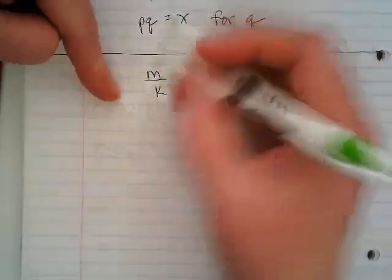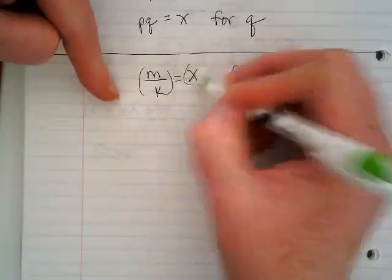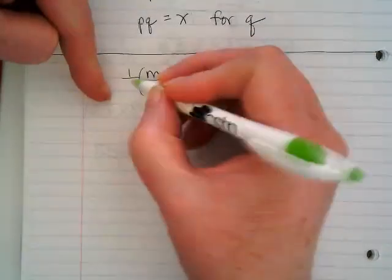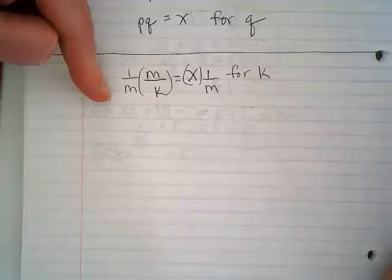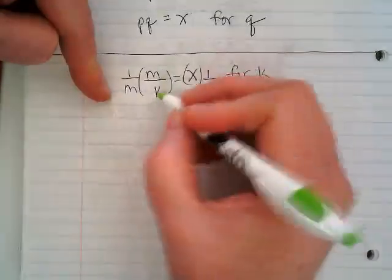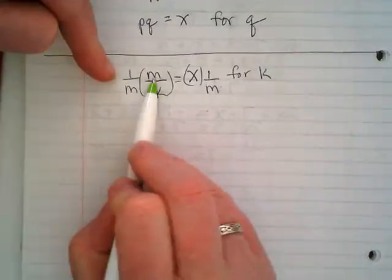So it's pretty simple to look at this and realize you want to move that m and we can do what we just talked about. We can multiply by the reciprocal of the m and that's going to leave the k 1 times m.